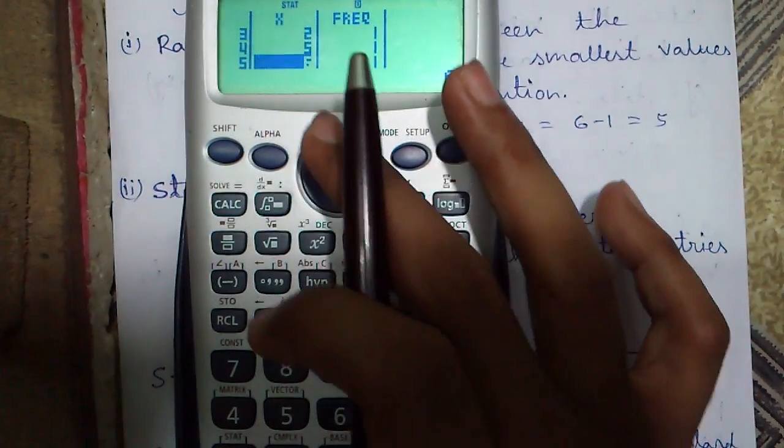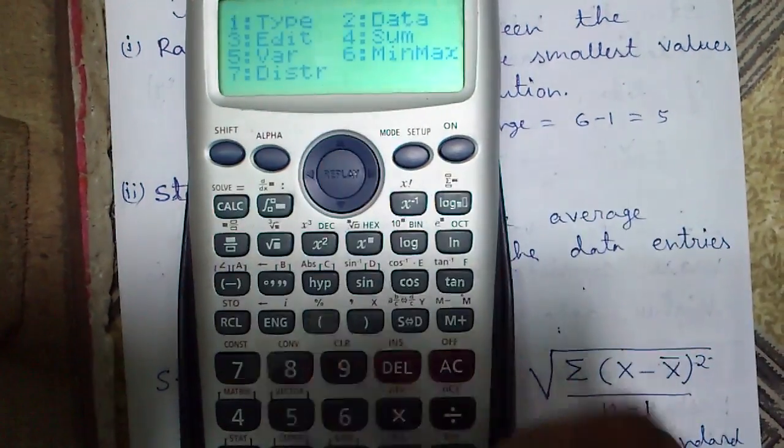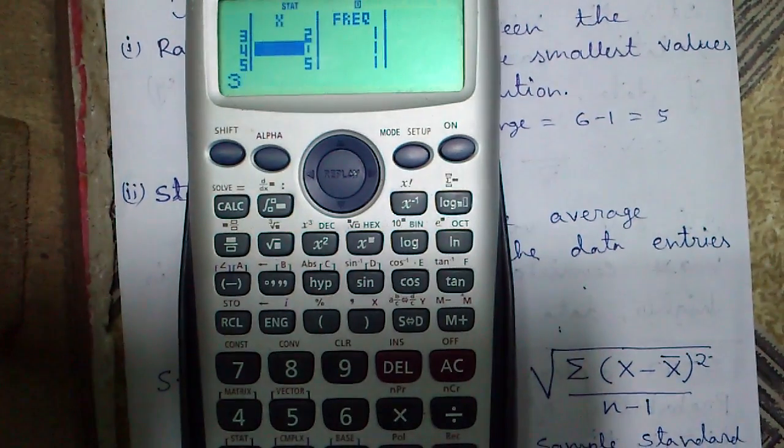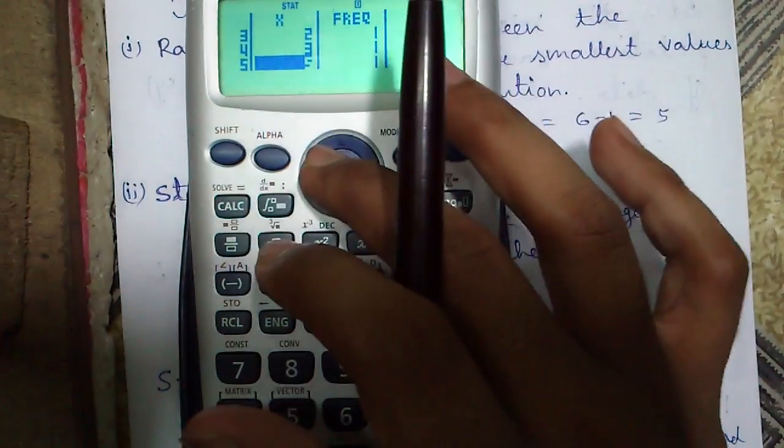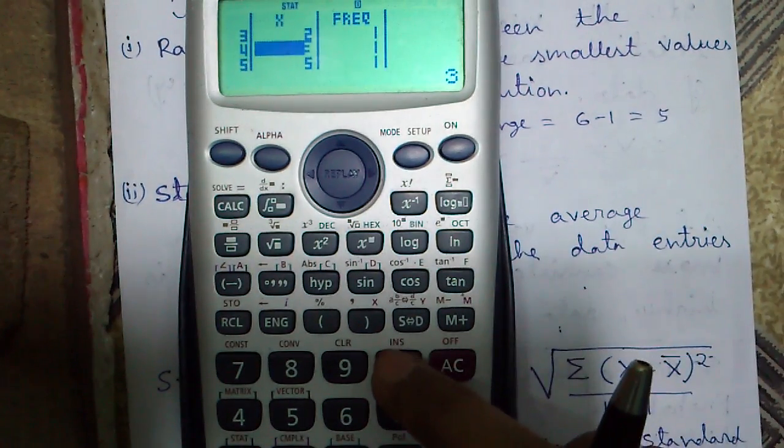Suppose I want to insert 3 above 5, so I will highlight 5 and choose edit, insert and 3 equals. So 3 is inserted. To delete these 3 or any element, highlight that element and press del.